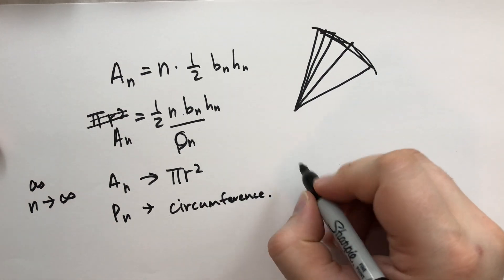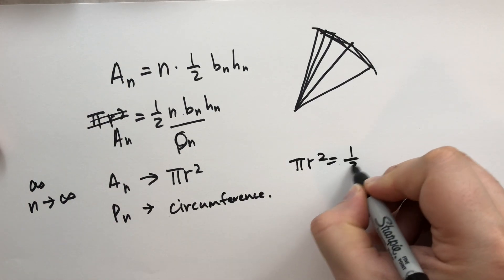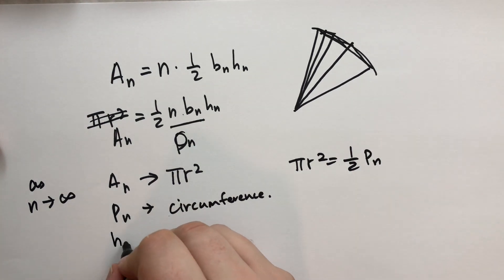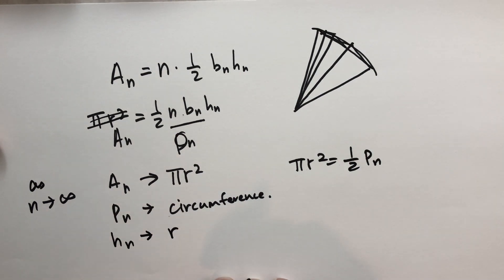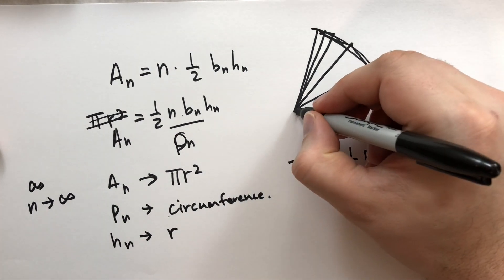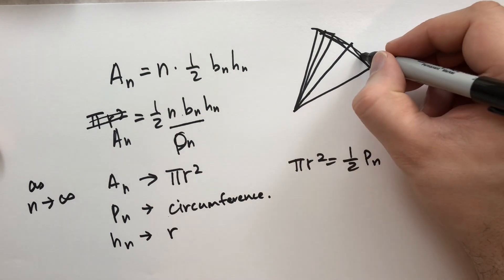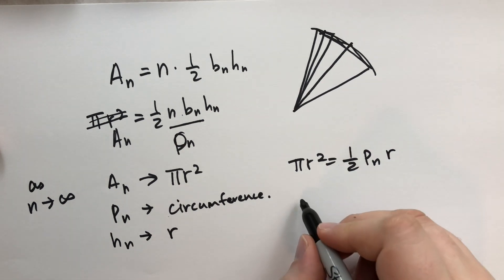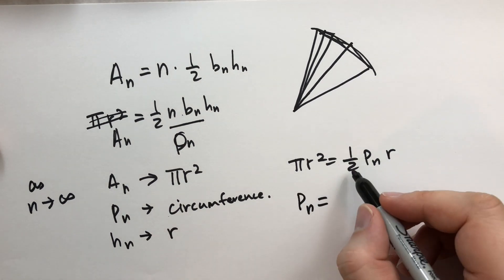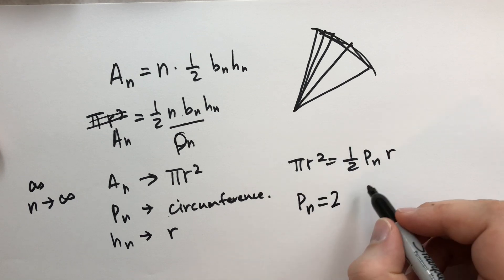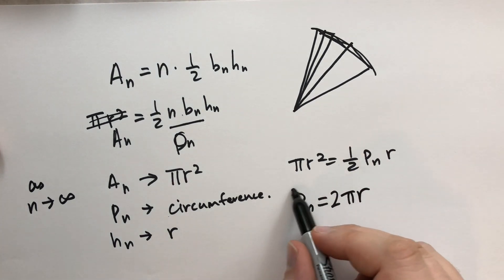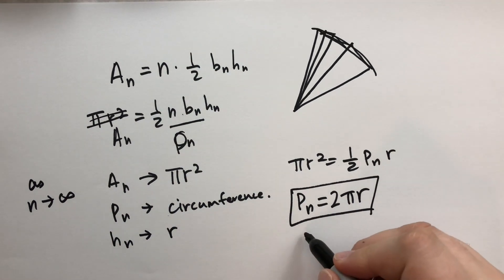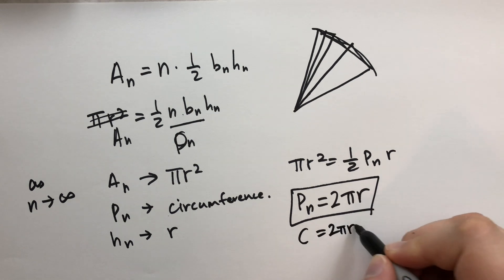So let's put that into a formula. We have πr² equals one-half the circumference. And what does h_n become? h_n approaches the radius r. This distance here from the center to the bottom of the base gets closer and closer to the edge, so this is r. So we can solve for p_n. That's going to be equal to, we multiply two on the other side, we divide by r. And that is how we can conclude that the circumference of a circle is equal to 2πr.